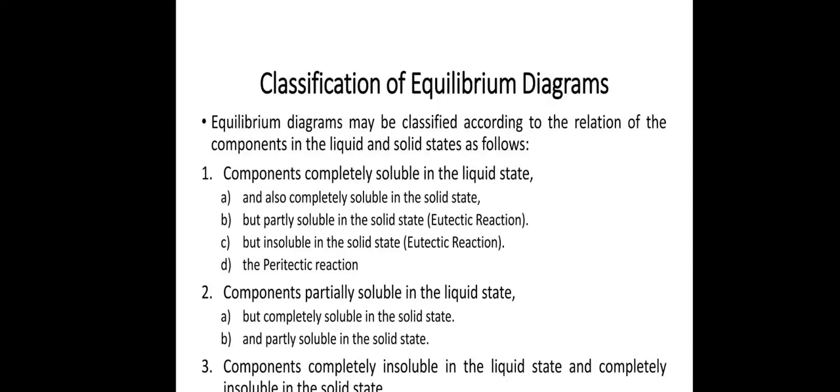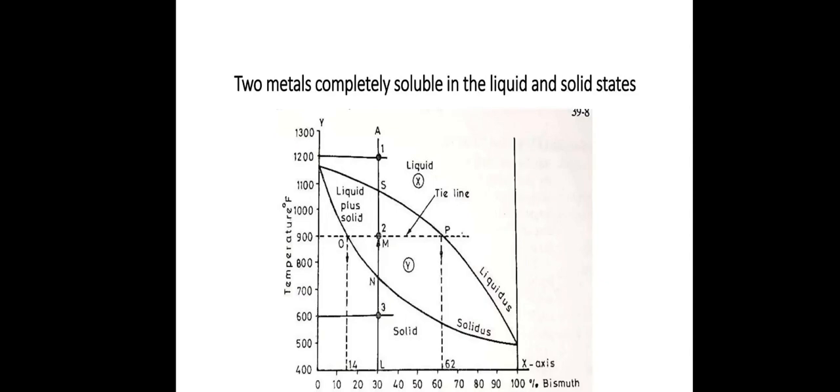Classification of equilibrium diagram. Equilibrium diagrams may be classified according to the relationship of the components in the liquid and solid state as follows: components completely soluble in the solid state, components partially soluble in the liquid state, components completely insoluble in the liquid state and completely insoluble in the solid state. Here we can see bismuth as an example. It creates a liquid and solid region when heating the particular metal.